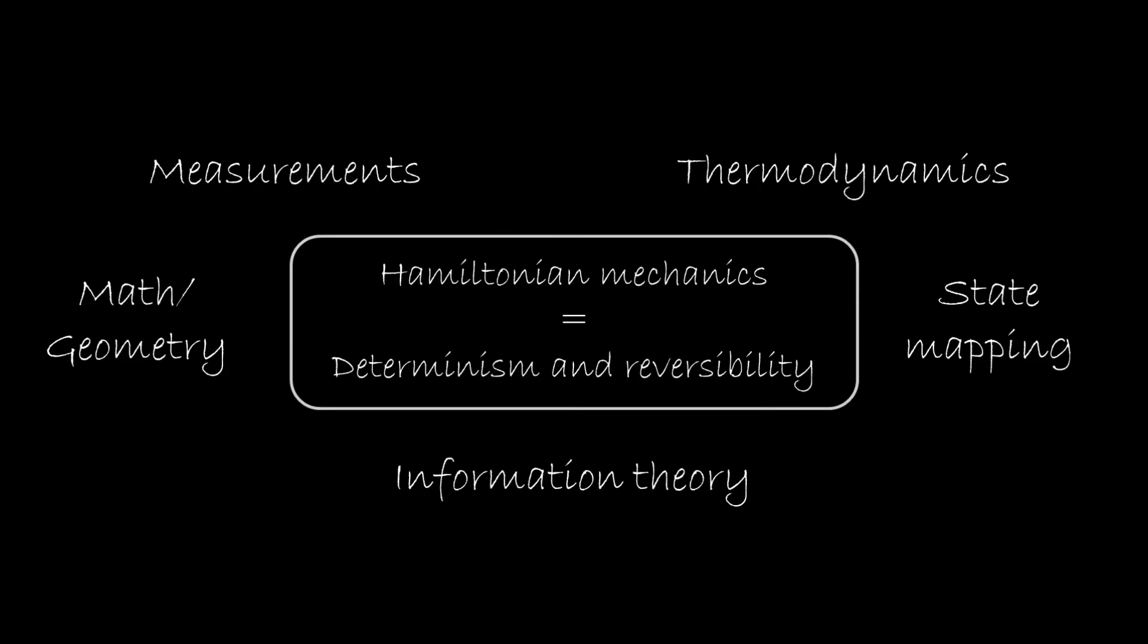In the previous sections we saw how Hamiltonian mechanics coincides with determinism and reversibility. In this section we are going to see how this generalizes to multiple degrees of freedom. Since we are going to work in a six-dimensional space, it's going to be a little bit more tricky to visualize and understand what's going on. But we can still do something.